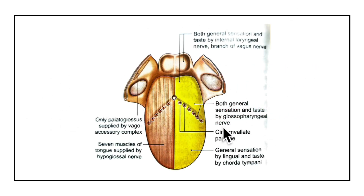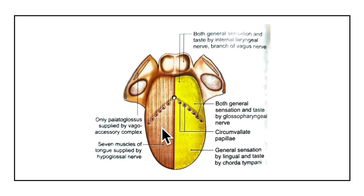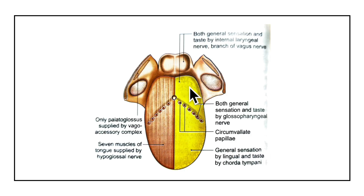Now let's learn about the nerve supply of the tongue. We have motor nerves and sensory nerves. All the intrinsic and extrinsic muscles except the palatoglossus are supplied by the hypoglossal nerve. The palatoglossus is supplied by the cranial root of the accessory nerve through the pharyngeal plexus — so 7 out of 8 muscles are supplied by the 12th cranial nerve. For sensory nerves: the lingual nerve is the nerve of general sensation and the chorda tympani is the nerve of taste for the anterior two-thirds of the tongue except the vallate papillae. The glossopharyngeal nerve provides both general sensation and taste for the posterior one-third including the circumvallate papillae. The posterior-most part of the tongue is supplied by the vagus nerve through the internal laryngeal branch.